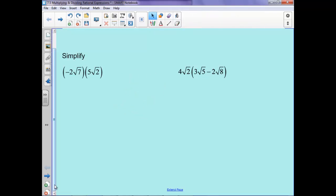So what we're going to do is negative 2 times 5 is negative 10. And then we'll have root 7 times 2 is 14. 14, just to check, is 2 and 7. Can't break it down. We're done.